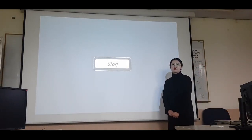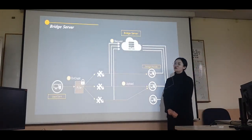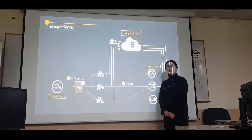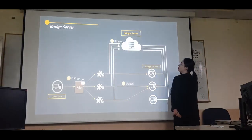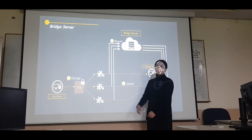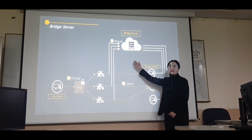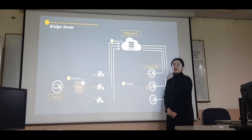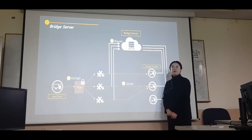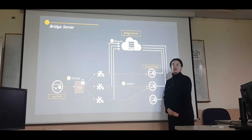Next is Storj, a decentralized storage platform based on the Ethereum blockchain. Storj is decentralized storage, but a centralized server called the bridge server exists. First, the encrypted files are split, and then before distributing and saving them, a request is made to the bridge server. The bridge server selects storage providers. When a request is granted, the files are distributed and stored. The bridge server stores only the communication content.